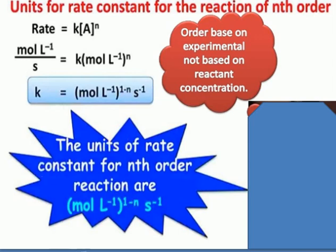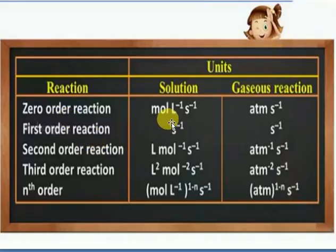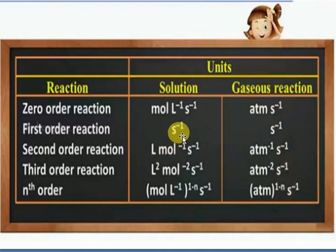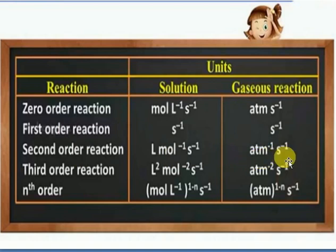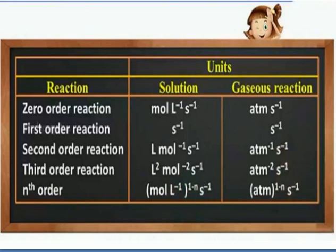To summarize: for zero-order reaction, units are moles litre inverse second inverse; in gas form, atmosphere second inverse. For first-order reaction, units are second inverse. For second-order reaction, units are litre mole inverse second inverse, or atmosphere inverse second inverse. For third-order, litre squared mole to the power minus 2 second inverse. Based on the units of the rate constant, you can find the order of any chemical reaction. Thank you.